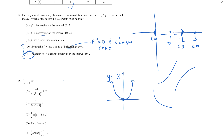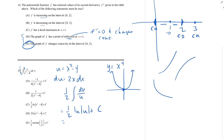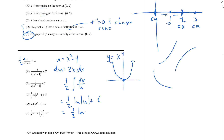Number 15. Integral — let u equal x squared minus 4. Then du is 2x dx. Put in a 2, take out a 1 half. So this becomes 1 half times the integral of du over u, which is 1 half natural log absolute value of u plus c. That's 1 half natural log absolute value of x squared minus 4 plus c — which looks like that answer right there.